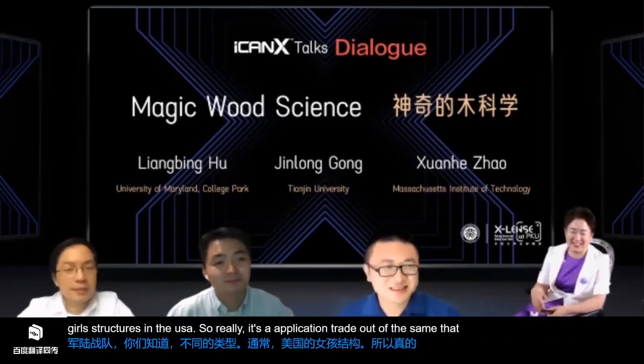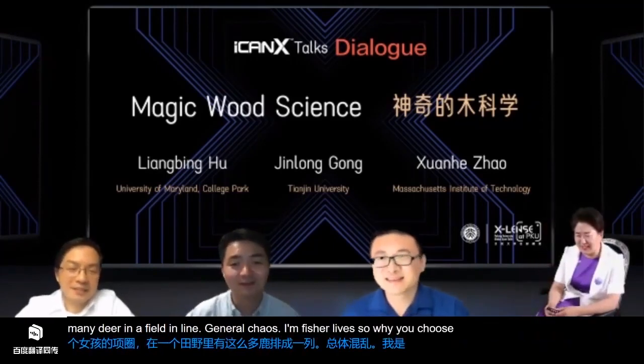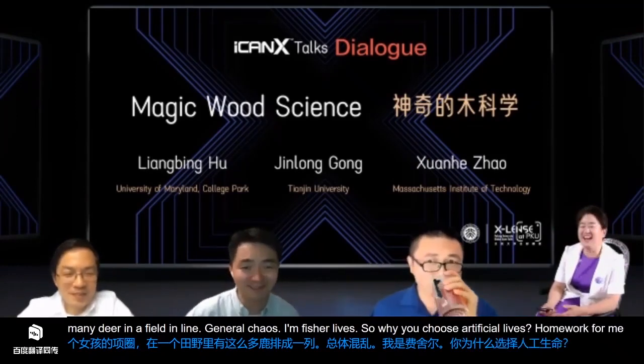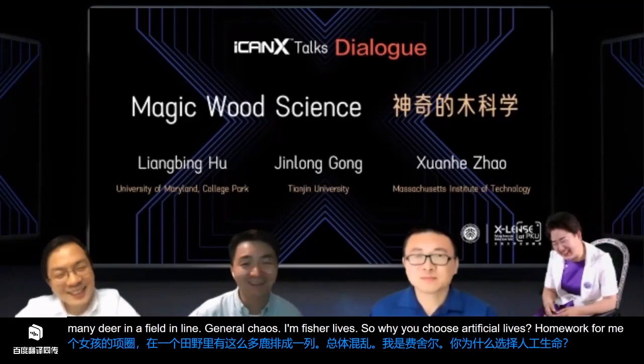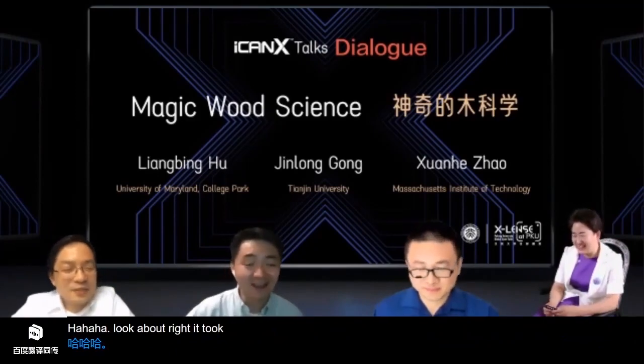That's great. The world has so many different fields. Jin Long, can you tell us about artificial leaves? Why did you choose artificial leaves? I would like to absorb light, like a bamboo.